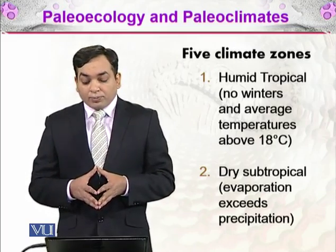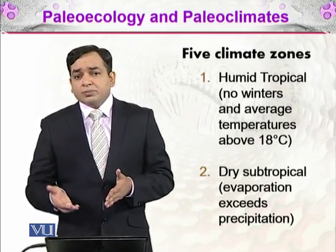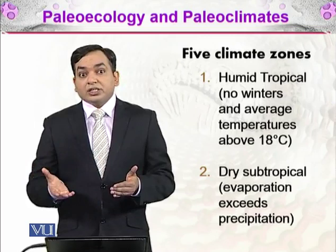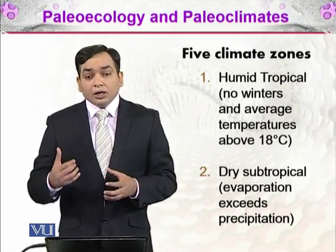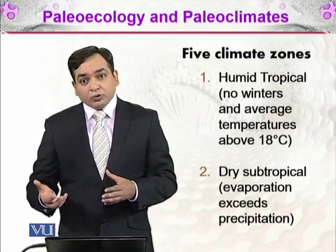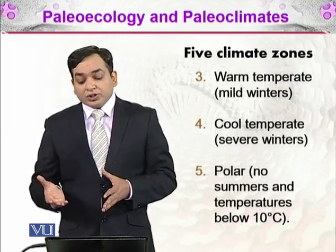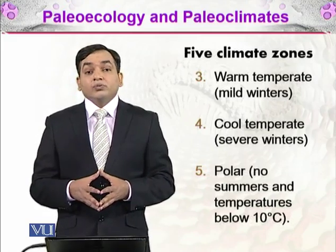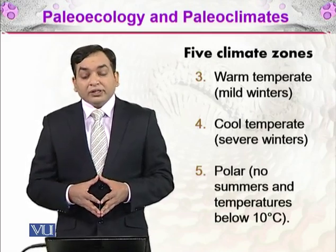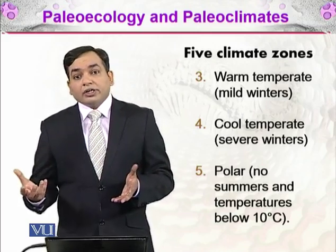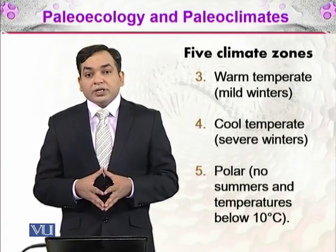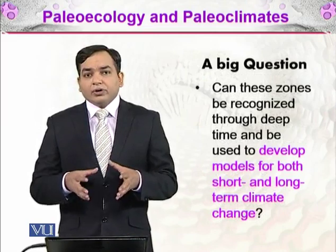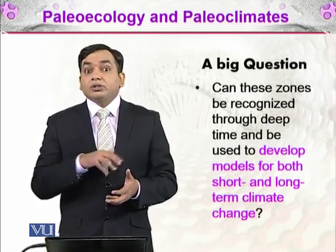Then there are dry subtropical zones, where evaporation exceeds precipitation — Pakistan is an example, with areas like Balochistan having much more evaporation than rainfall. Then there are warm temperate zones with mild winters, and cool temperate zones with severe winters, such as most of Europe and Siberia. Finally, there are polar zones — the Arctic and Antarctic regions — where there are no summers and the temperature is always below 10 degrees Celsius. These are the five climate zones for today's environment.